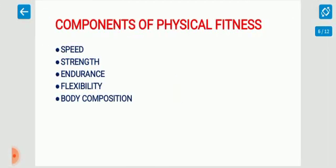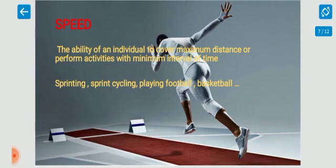There are five major components of physical fitness: speed, strength, endurance, flexibility and body composition. If you include all five components in your exercise routine, you can achieve a better fitness level. First, we are going to discuss about speed. The ability of an individual to cover maximum distance or do things within a minimum interval of time is called speed. For example, sprinting, sprint cycling, playing basketball, football, etc.